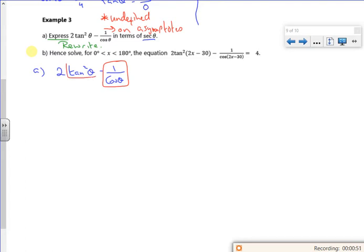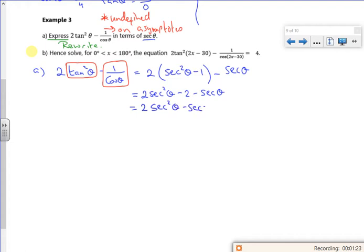And I know that tan²θ + 1 is sec²θ. So I'm going to replace that with sec²θ - 1. Then I've got secant theta as well. So it's 2sec²θ - 2 - secθ. And if you look, it's a disguised polynomial, a disguised quadratic. So I'm just going to rewrite it there. And I've got a nice disguised quadratic.